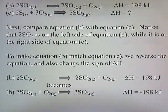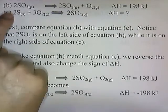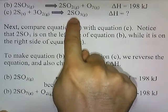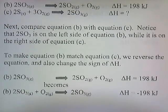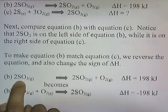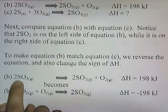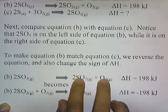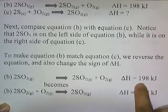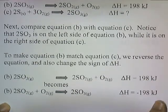Next, let's compare equation B with equation C. Notice that 2SO3 is on the left side of equation B, while it's on the right side of equation C. So to make equation B match equation C, we reverse the equation and also change the sign of delta H. We flip this equation so that 2SO3 moves to the right side, and 198 becomes negative 198. When you flip the equation, you change the sign of the delta H.